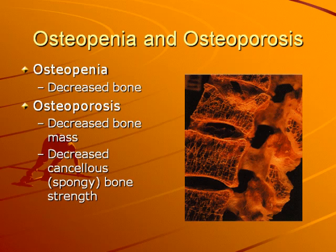Osteopenia is actually not a diagnosis but a condition. It is decreased bone mass, which is a part of osteoporosis. With osteoporosis, you actually have osteopenia or decreased bone mass. You see this obviously more in women, your older woman who is in menopause. Not only do you have a decrease in bone mass but you have a decrease in the spongy bone, or your innermost bone strength, which leads to an increase in bone fragility and the potential for bone breaks or fractures.